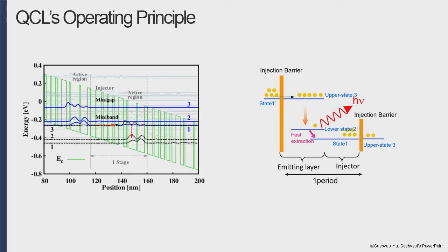The electron transition from E3 to E2 corresponds to the luminescent transition and emits one photon. After that, electrons move from E2 to E1 by a relaxation process and are injected into the injection region of the next adjacent stage.